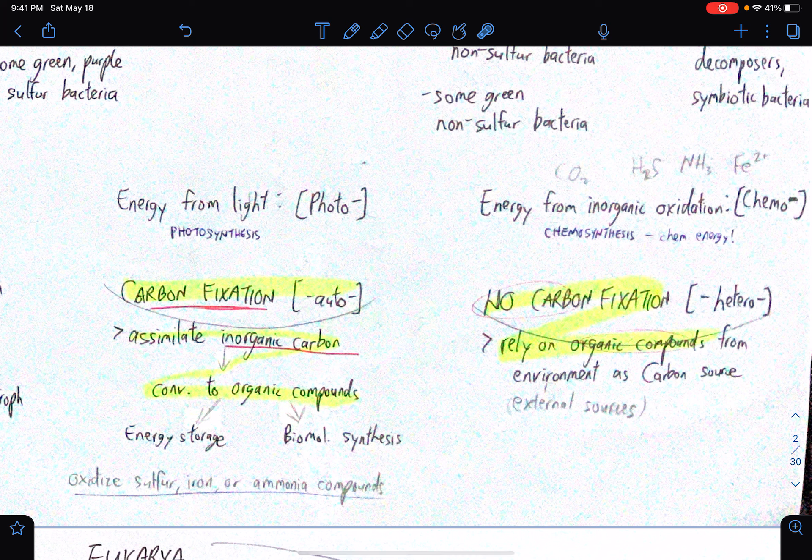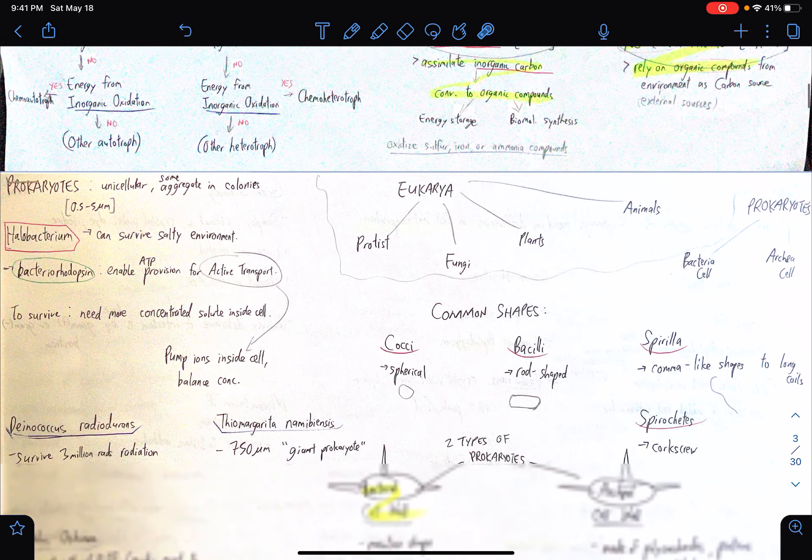So the assimilation process is intended for energy storage and biomolecule synthesis. So yes, they oxidize sulfur, iron, or ammonia compounds. For prokaryotes that do not undergo carbon fixation, they rely on organic compounds from the environment as a carbon source. So they source externally, basically.